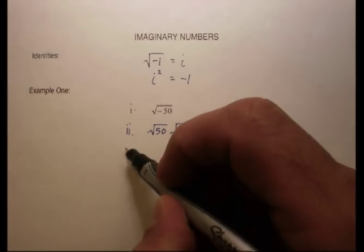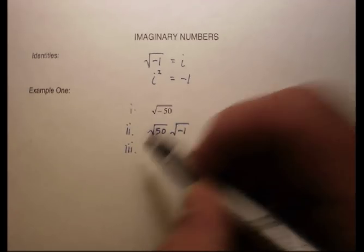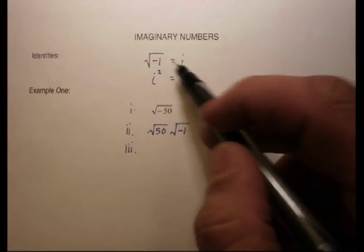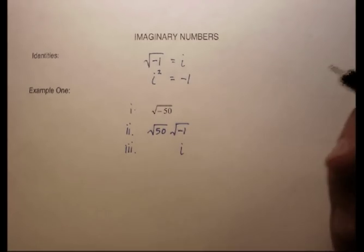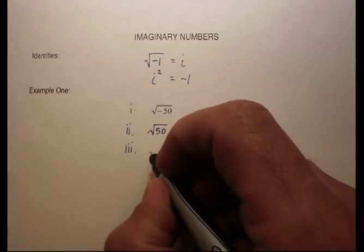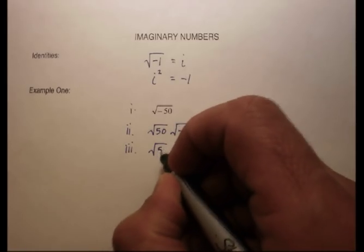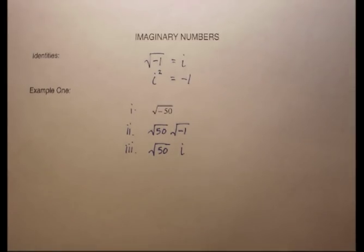Now, what I know here, according to my identities, is that the square root of negative 1 is called i. So I'm going to rewrite that part as i, and then I'm just going to take the square root of 50 like it were just a regular problem.